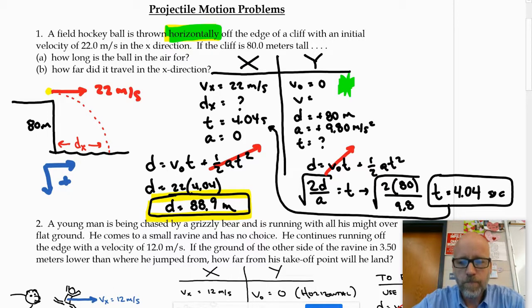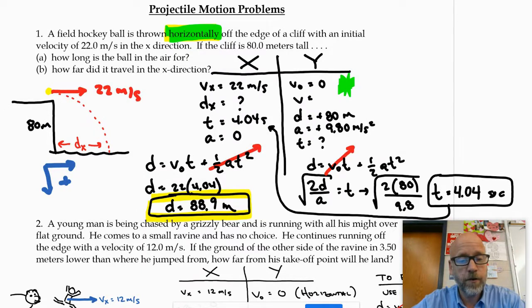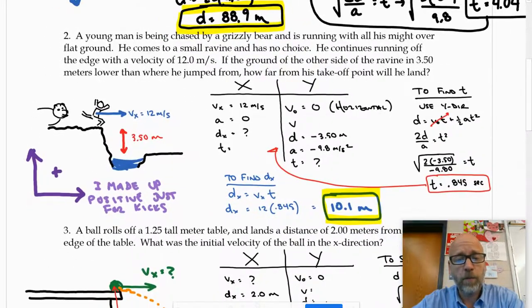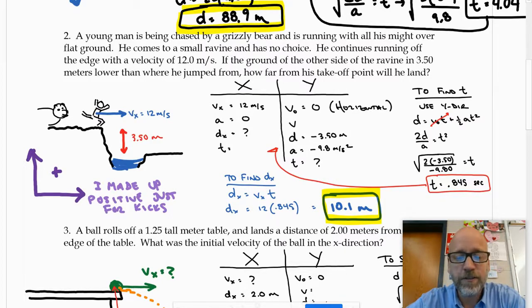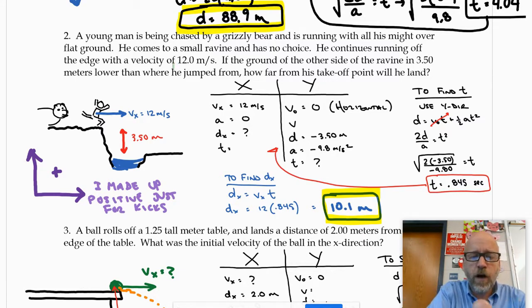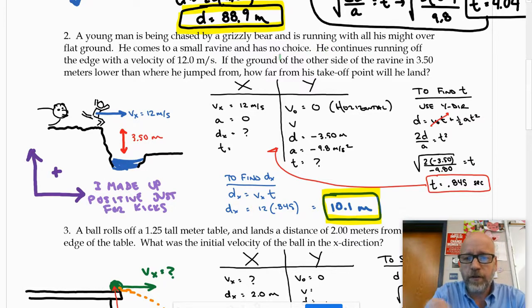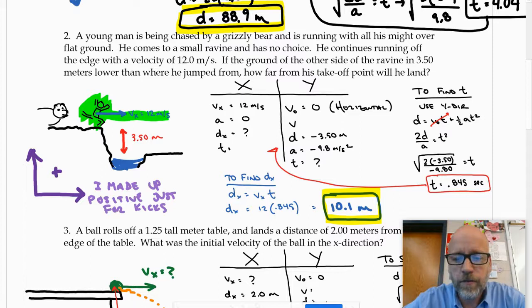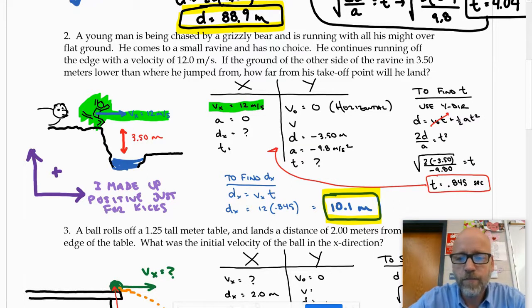Number two: a young man's being chased by a grizzly bear. This problem is very similar to number one. The only thing that I did differently was that I made up and to the right positive, just to show you that I could. Again, the key word as you're reading this is that he continues running off the edge. Now it doesn't say the word horizontally, does it? But if you were to imagine a person running straight off the cliff, their velocity would only be in the x-direction. Therefore, V-naught would be zero in the y-direction.